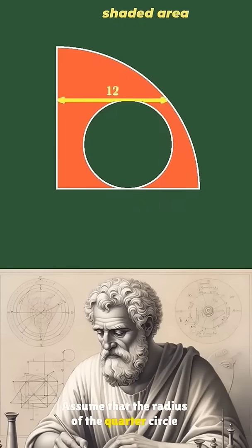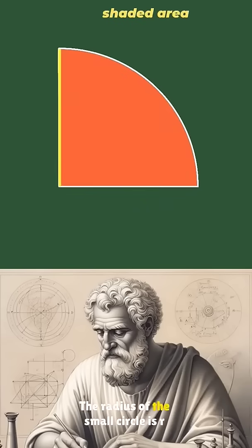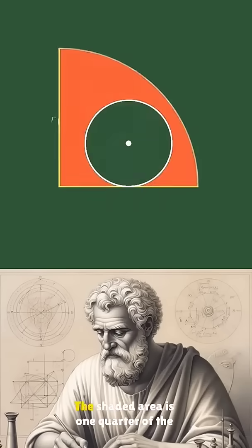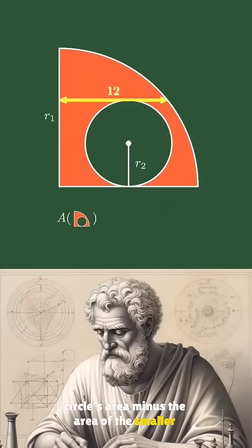Assume that the radius of the quarter circle is r1, and the radius of the small circle is r2. The shaded area is one quarter of the circle's area minus the area of the smaller circle.